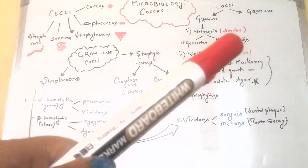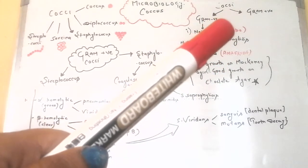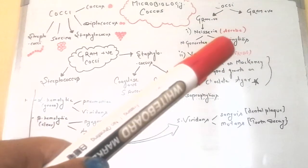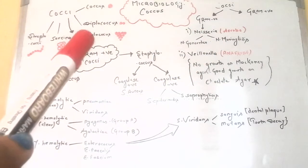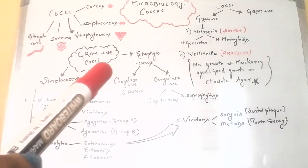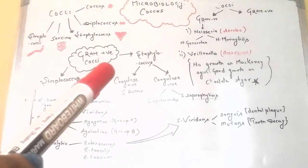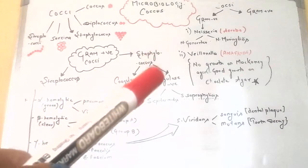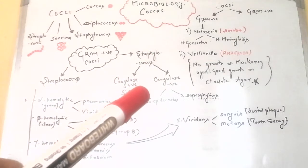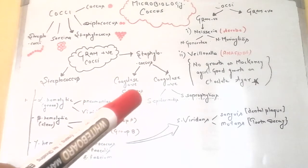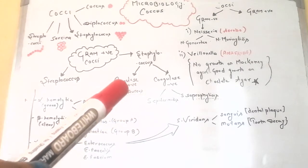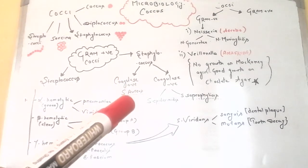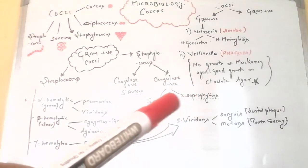Neisseria is further divided into N. gonorrhoeae and N. meningitidis. For gram-positive cocci, we have Streptococcus and Staphylococcus. Staphylococcus is further divided on the basis of coagulase activity into coagulase-positive and coagulase-negative.